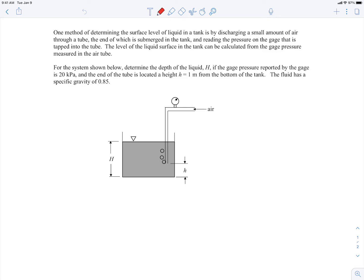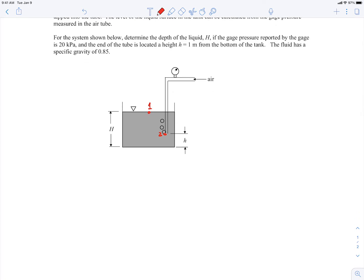So the way we're going to work this out is we're going to pick a couple of points. Let's call this point one, and then let's call this point two right at the exit of the tube. Then we'll just use hydrostatics to figure out the pressure there.